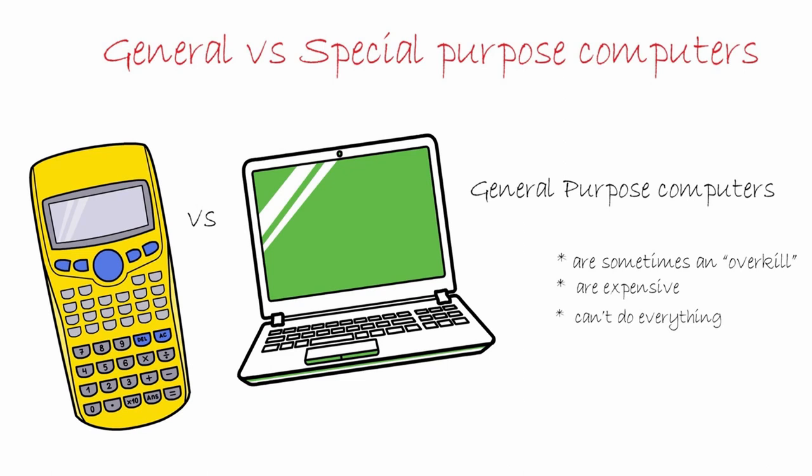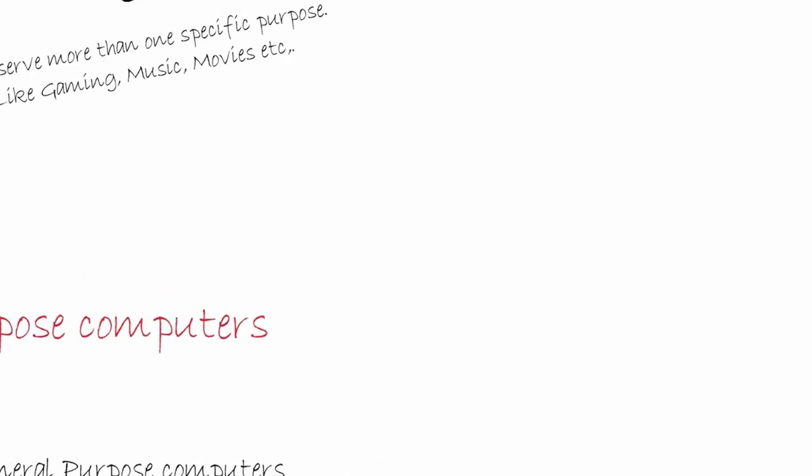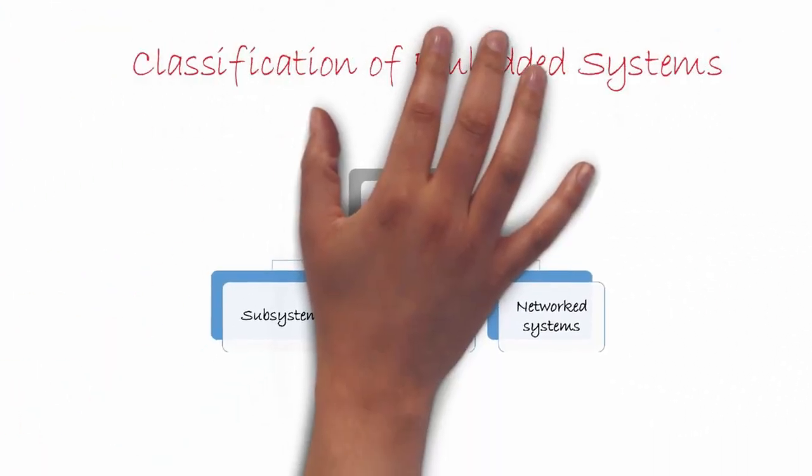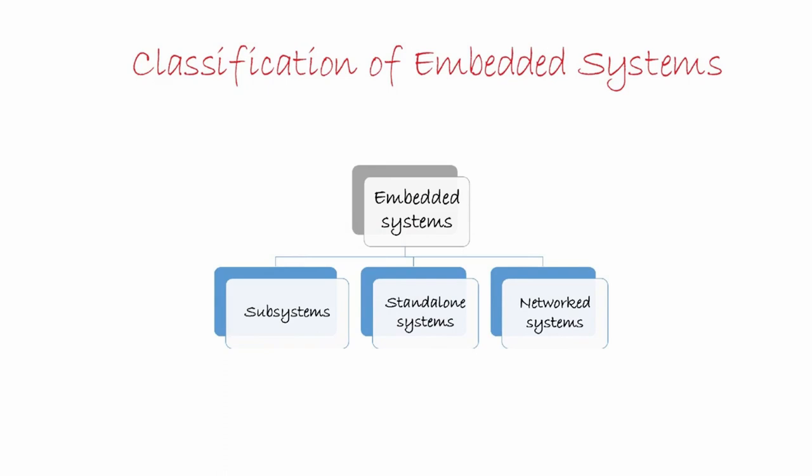Embedded systems can come in different flavors. They can be broadly classified into three categories: subsystems, standalone systems, and networked systems.